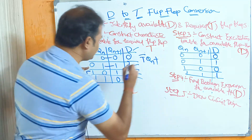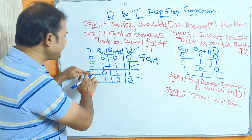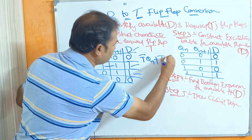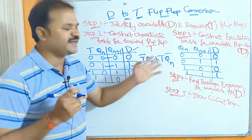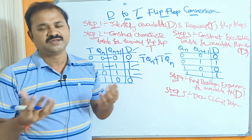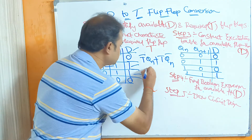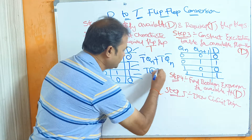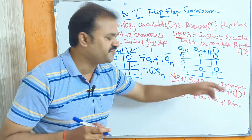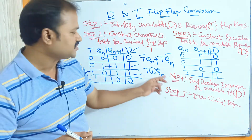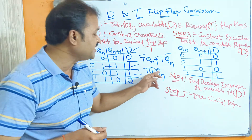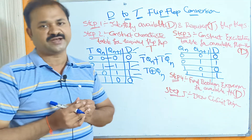The first minterm is T̄·Qn (T=0, Qn=1), and the second minterm is T·Q̄n (T=1, Qn=0). This is of the form Ā·B + A·B̄, which is the exclusive-NOR (XNOR) formula. Therefore, D = T XNOR Qn. This is the Boolean expression for the available flip-flop D, completing Step 4.